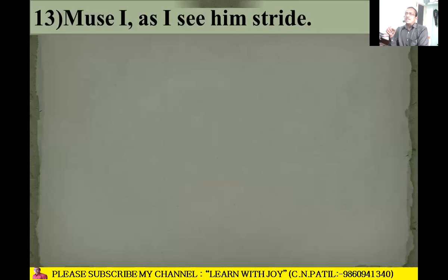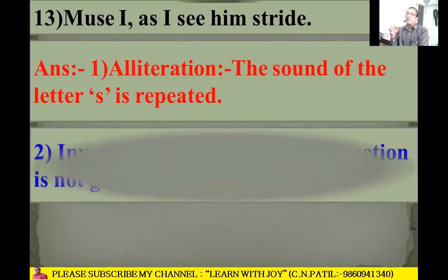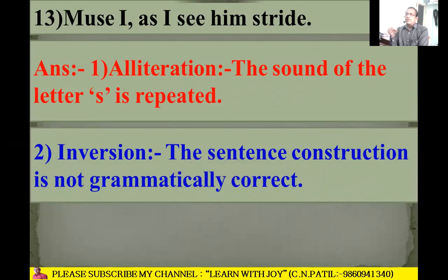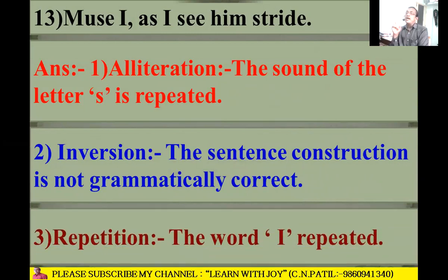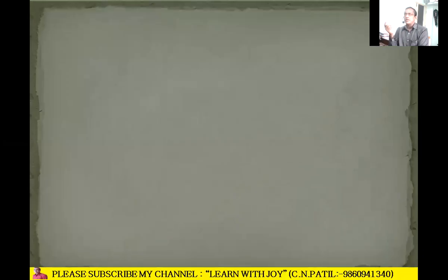Next line: 'Muse I as I see him stride.' Alliteration is there because the 's' sound is repeated: 's' in 'see' and 's' in 'stride.' Inversion is also there as the sentence construction is not grammatically correct. Repetition is also there — the word 'I' is repeated twice.